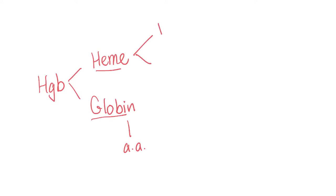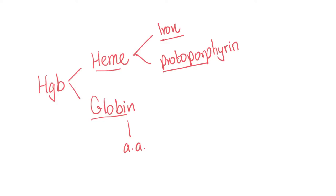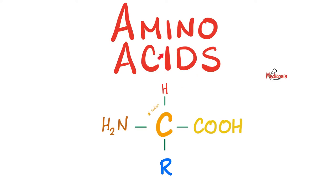But how do I make heme? You need two molecules: you need iron, and you need protoporphyrin. How do I get the iron? It's a mineral — you take it in through your diet, for instance. How do I get protoporphyrin? You get protoporphyrin in the heme synthesis pathway from an amino acid known as glycine, which will combine with something else called succinyl-CoA.